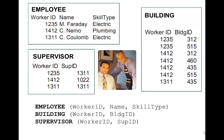Here's a simple employee-supervisor database. We've got three tables: employee, building, and supervisor. The employee table has three fields: worker ID, name, and skill type — written as employee(workerID, name, skillType). We have a building table with worker ID and building ID. We have a supervisor table with worker ID and supervisor ID. You can immediately see that worker ID exists in all three tables — this shorthand is quite helpful for listing out the various tables and fields.